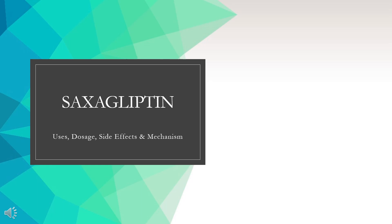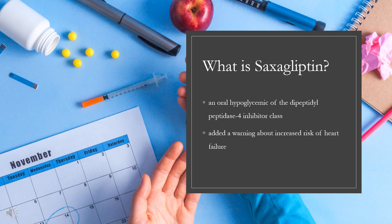Saxagliptin is a DPP-4 inhibitor used for the management of type 2 diabetes mellitus. Saxagliptin, sold under the brand name Onglyza, is an oral hypoglycemic of the dipeptidyl peptidase-4 inhibitor class. Early development was solely by Bristol-Myers Squibb. In 2007, AstraZeneca joined with Bristol-Myers Squibb to co-develop the final compound and collaborate on the marketing of the drug.